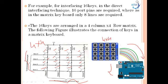Looking carefully at the diagram, each row and column has a switch placed between them. Each switch, if pressed, creates a short in that path. For example, if power supply is passed through a row and a key in that row is pressed, that path is shorted while other paths remain open.